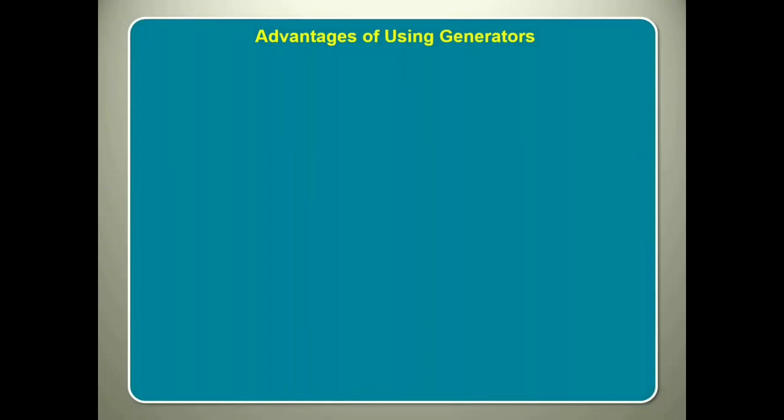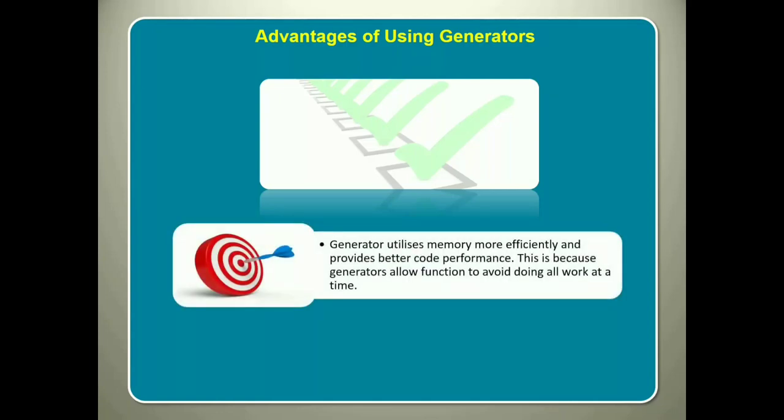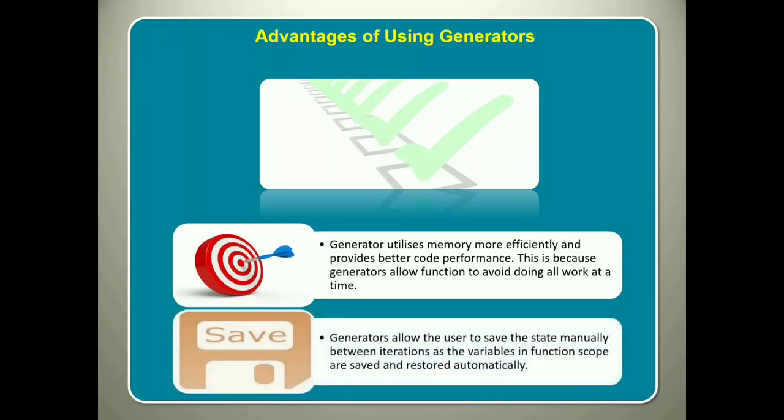Now that you have understood about generator functions, let us list few advantages of using generators. Here are two major advantages why you must use generators. One, generator utilizes memory more efficiently and provides better code performance. This is because generators allow function to avoid doing all work at a time. Two, generators allow you to save the state manually between iterations as the variables in function scope are saved and restored automatically.